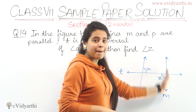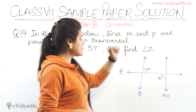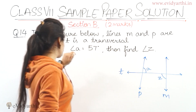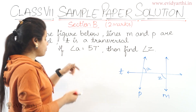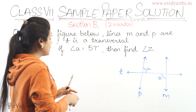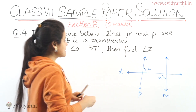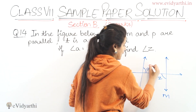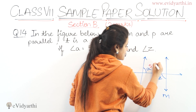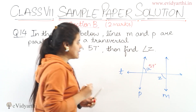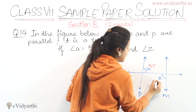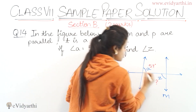P and M are two parallel lines, and T is a transversal. If angle A equals 57 degrees — this angle A is 57 degrees given — we have to find angle Z.